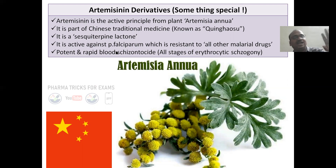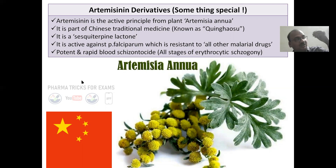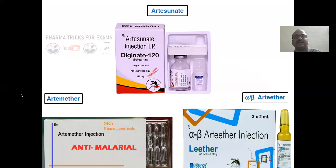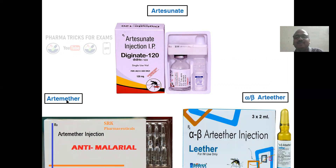If you are giving all drugs and malaria is not decreasing, the doctor must give artemisinin — it is the final weapon even when all other drugs are not working. Artemisinin works compulsorily. It acts on all stages of erythrocytic schizogony — it is a potent and rapid blood schizontocide. Thanks to China for this compound. All artemisinin derivatives are available as injections.